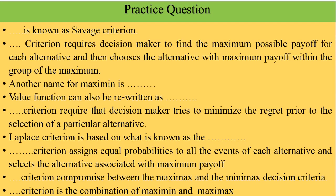We have some practice questions. Blank is known as the Savage criterion. Blank criterion requires the decision maker to find the maximum payoff for each alternative. Another name for maximin is blank. The value function can also be written as blank. Blank criterion requires the decision maker to minimize the regret from the selection. Thanks for watching — bye for now.